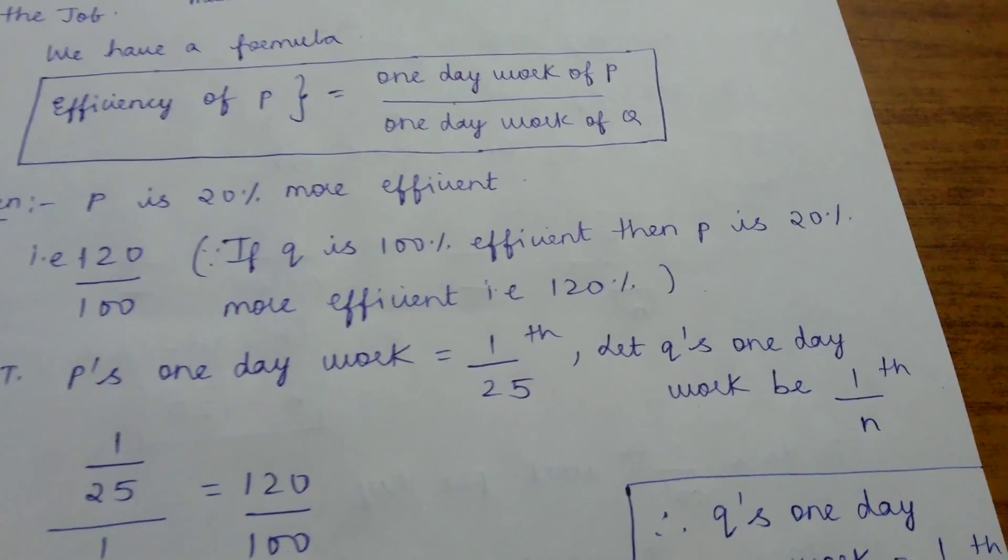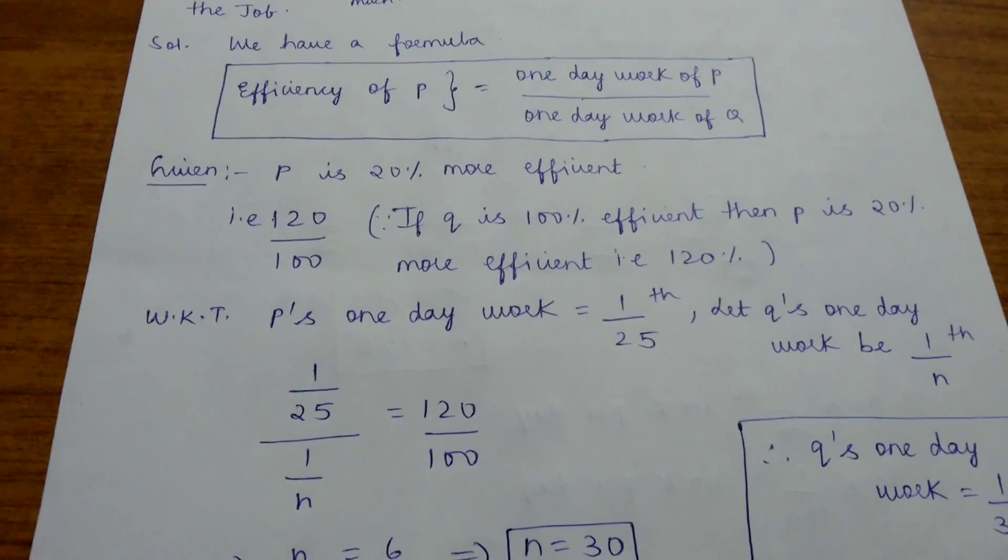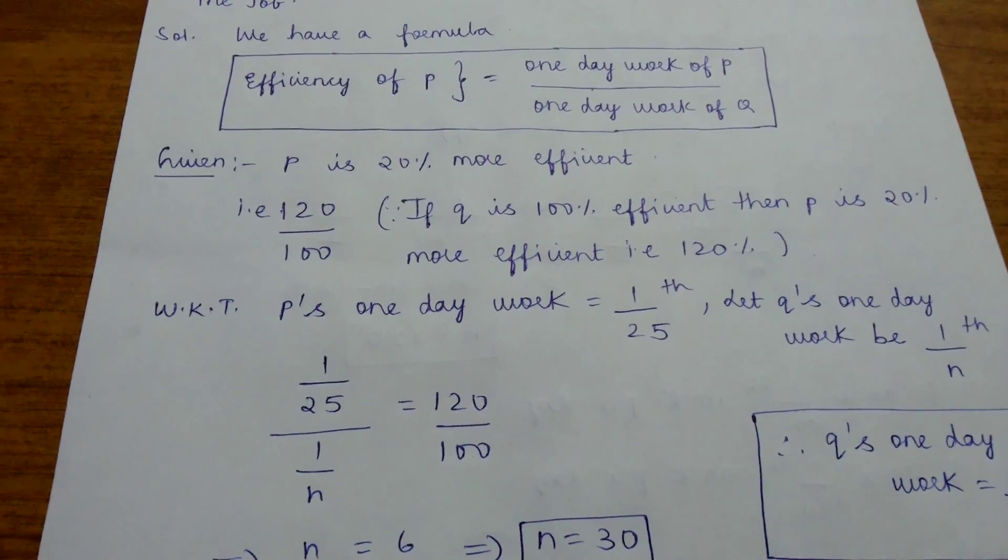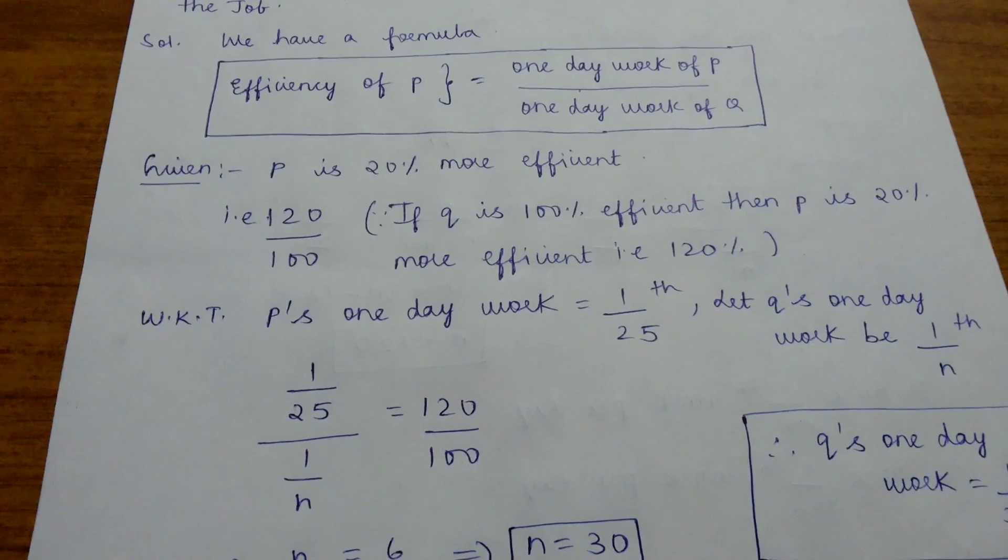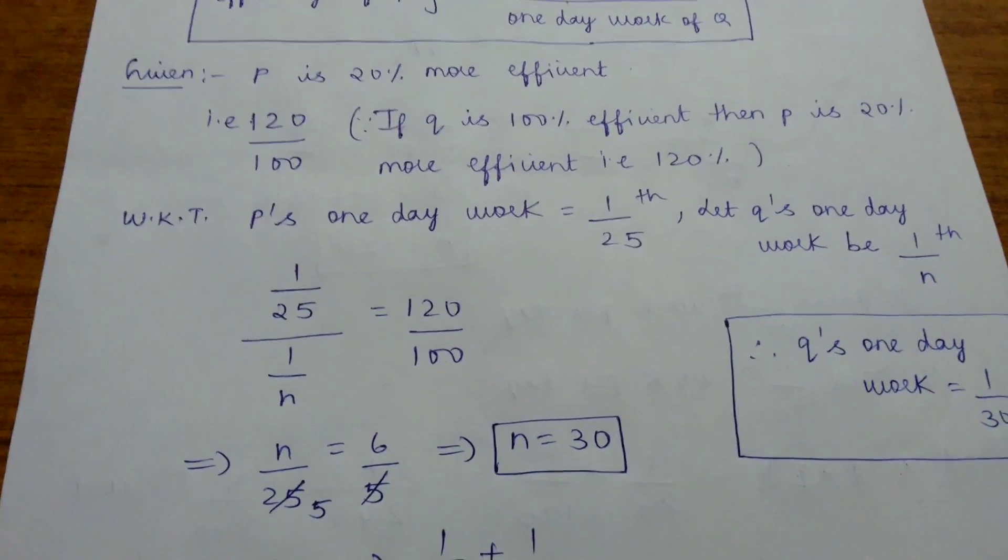Let Q's one day work be 1 by N. Substituting in the formula, one day work of P divided by one day work of Q equals 120 by 100. We get N equals 30.